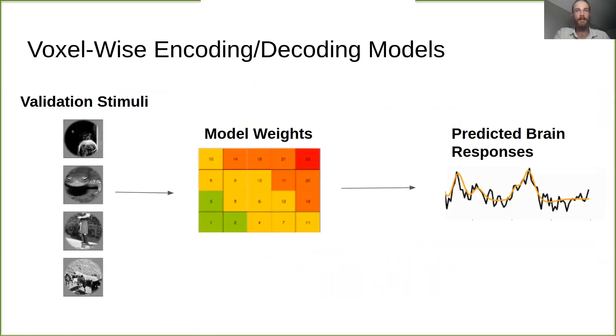Finally, we used the resulting model weights to predict brain responses to each of the stimuli in the validation set, with the correlation between the predicted and recorded brain responses in each voxel serving as a metric of prediction accuracy.